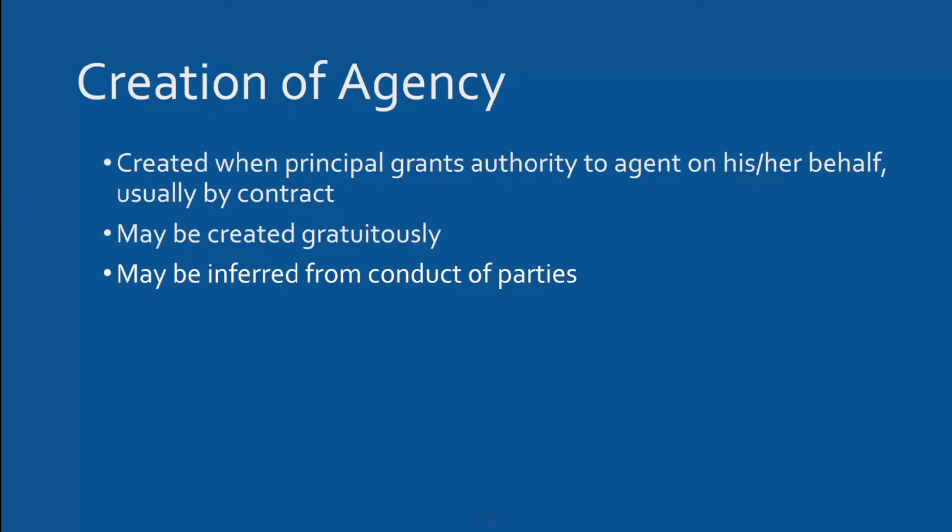However, if you ask Sally to sell you life insurance and she agrees, there's a problem from the insurance company's point of view. She hasn't been given the authority to sell life insurance, but you don't know that — you just know Sally is an insurance agent. This is one of the challenges in the agency relationship: the buyer doesn't know, nor should they know, the extent of the agent's authority.